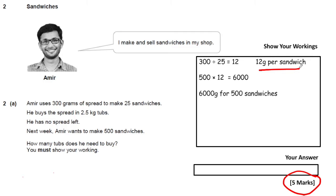Now he needs to make 500 sandwiches, so we work out how many grams of spread he needs to make 500 sandwiches. He uses 12 grams per sandwich, so 500 times 12 equals 6,000. That's 6,000 grams to make 500 sandwiches.